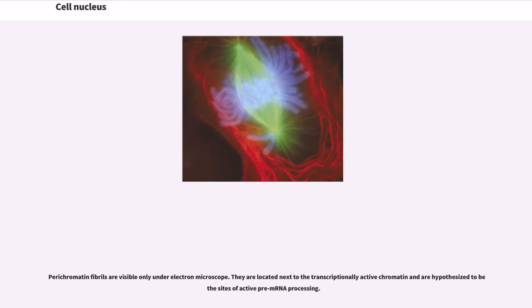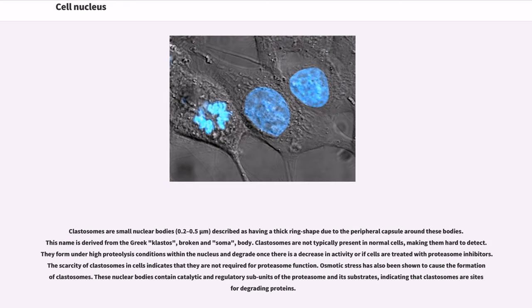Perichromatin fibrils are visible only under electron microscope. They are located next to the transcriptionally active chromatin and are hypothesized to be sites of active pre-mRNA processing. Clastosomes are small nuclear bodies, 0.2 to 0.5 micrometers, described as having a thick ring shape due to the peripheral capsule around these bodies. This name is derived from the Greek klastos, broken, and soma, body. Clastosomes are not typically present in normal cells, making them hard to detect. They form under high proteolysis conditions within the nucleus and degrade once there is a decrease in activity or if cells are treated with proteasome inhibitors. The scarcity of clastosomes in cells indicates that they are not required for proteasome function. Osmotic stress has also been shown to cause the formation of clastosomes. These nuclear bodies contain catalytic and regulatory subunits of the proteasome and its substrates, indicating that clastosomes are sites for degrading proteins.